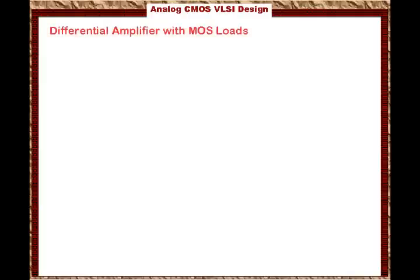Because this topic is about CMOS technology, one of the ways to implement the differential amplifier is to use a differential amplifier with MOS loads, which means the load resistors are replaced with transistors. Basically, we use transistors that act as resistors instead of RD.